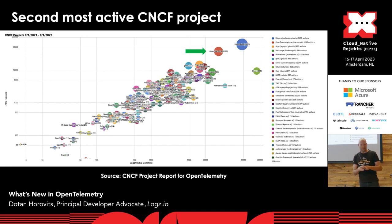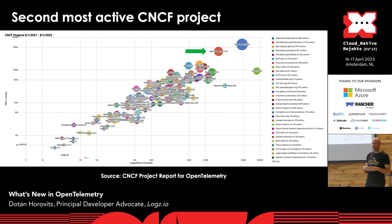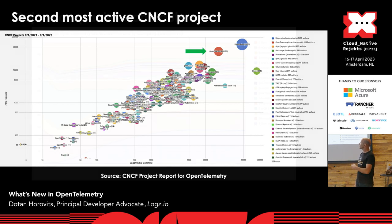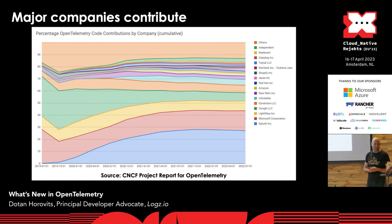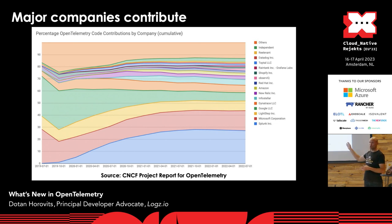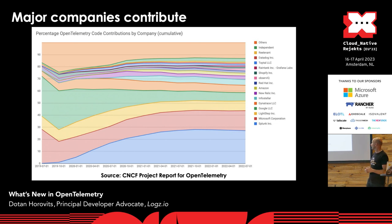OpenTelemetry has been adopted by all the major vendors, who are also getting involved in the project itself. You can see the company contributions: all the major cloud vendors — Microsoft, Amazon, Google — and all the major monitoring and observability players: Splunk, Datadog, Dynatrace, New Relic, and many others, including end users. This is an immensely active project. If we want this to become a de facto industry standard, that's a very good indicator.